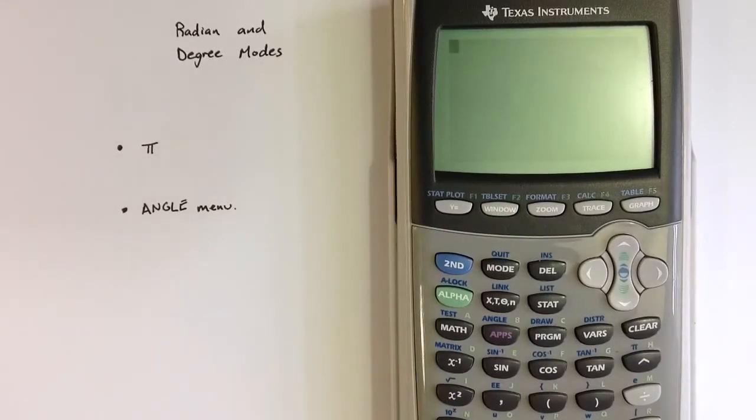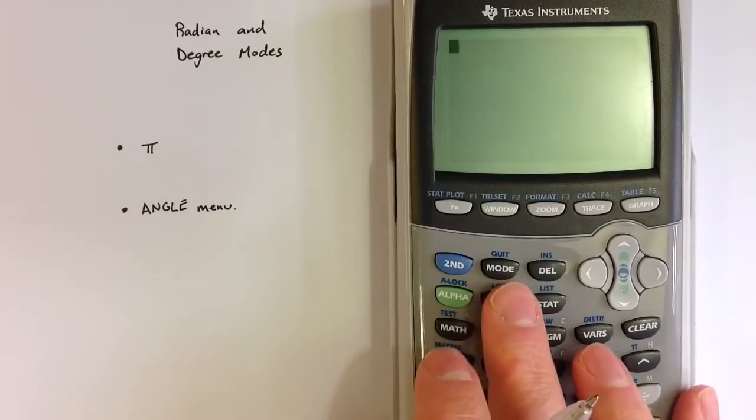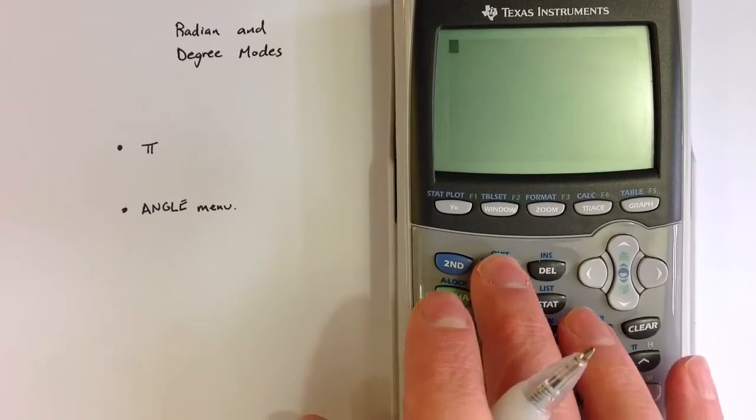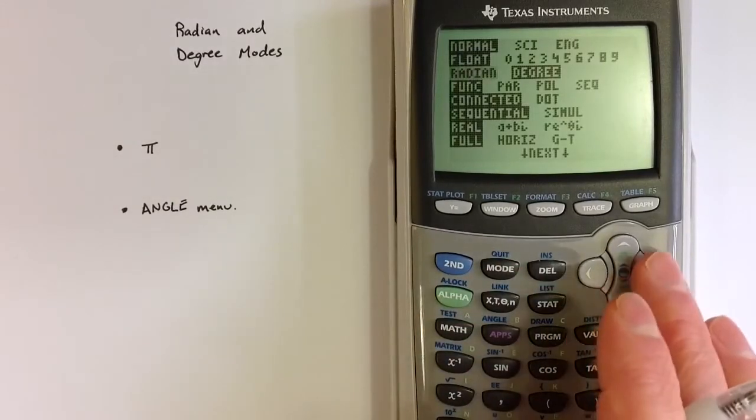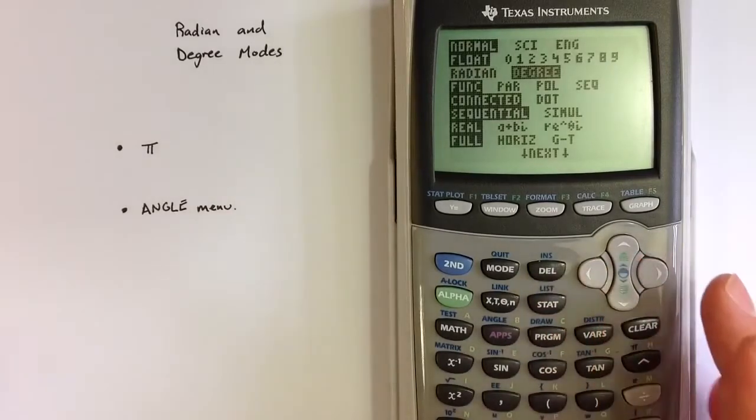I want to talk about radian and degree modes on a TI-83 and 84 graphing calculator. If we go to the mode menu, the third line down gives us a choice between radians and degrees, and these are two ways to measure angles.